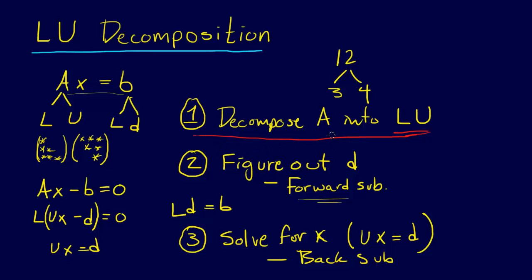Alright, so we gave an overview here. We've shown you as well how to decompose A into LU, and so the next step here is to figure out D, and that we do by solving this equation, LD equals B for D. And that's easy again because L is lower triangular.